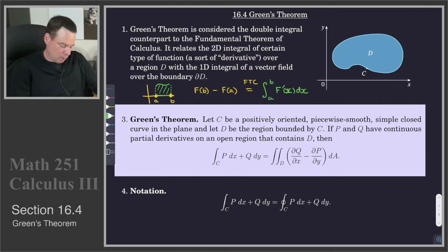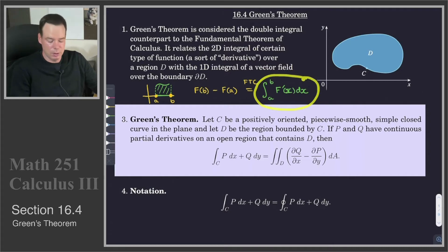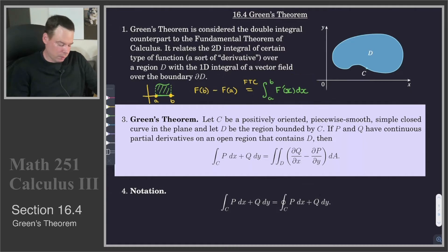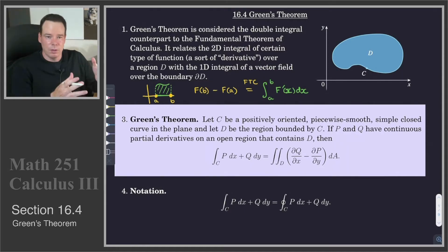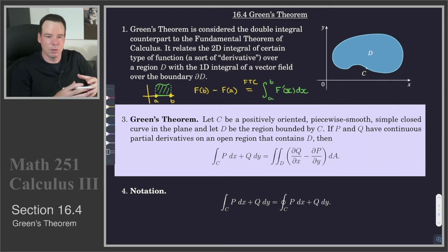Because when I look at this statement, the expression on the right is a statement about some function — in this case F prime — and its values over the whole interval from A to B. Whereas on the left, this is a statement about some function, in this case capital F, and its values at the endpoints. The Fundamental Theorem of Calculus says that these two quantities are related: the integral of F prime over the whole interval is related to the values of F at the endpoints.